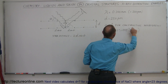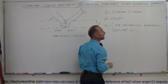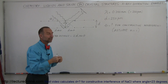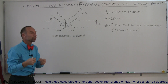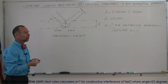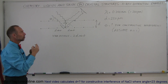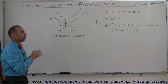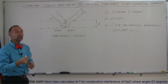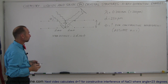For constructive interference, what should the angle be — assuming N equals 1, meaning this is the first order of constructive interference — so that the phase difference of the waves is one wavelength?